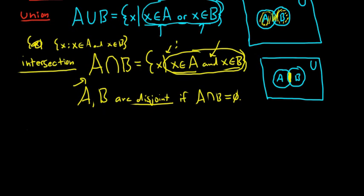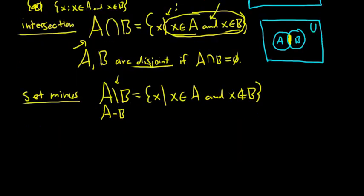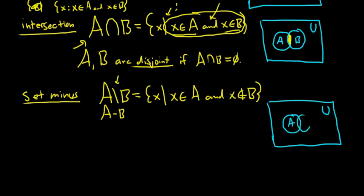Now two more set operations. The first is set minus, written A \ B. Sometimes people write a literal minus sign, but I prefer the backslash notation. This is the set of all x such that x is in A and x is not in B — so it's all the elements in A that are not in B. In the Venn diagram, here's U, here's A, and here's B. We shade just the part of A that doesn't overlap with B, leaving everything else unshaded.